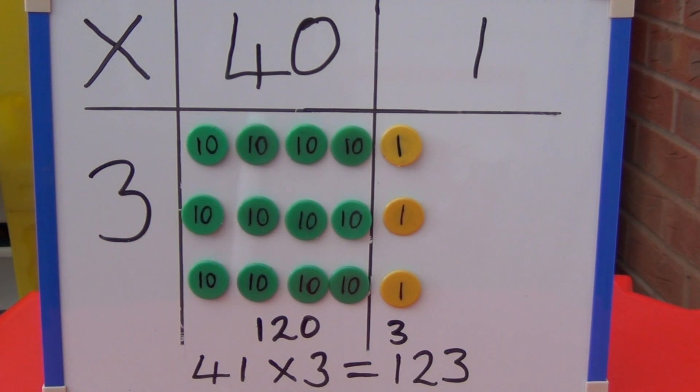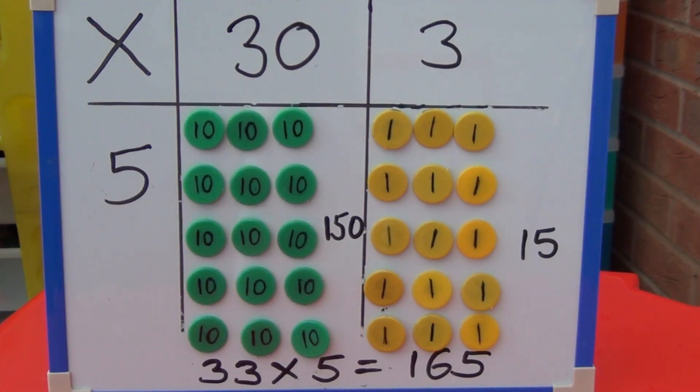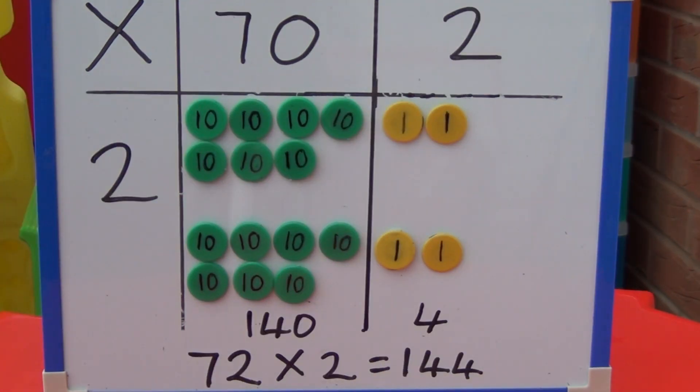For 41 times 3 there are 12 10s which is 120 and 3 1s so the answer is 123. For 33 times 5 there are 15 10s which is 150 and 15 1s so the answer is 165. For 72 times 2 there are 14 10s which is 140 and 4 1s so the answer is 144.